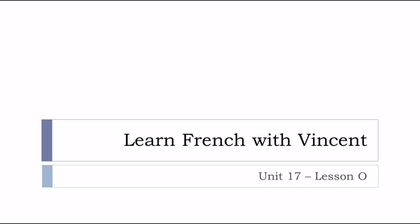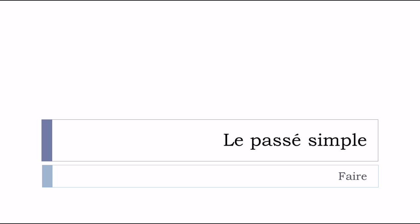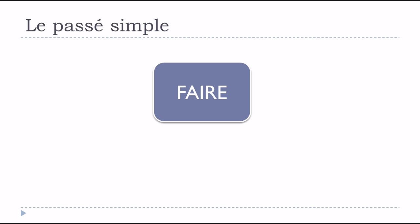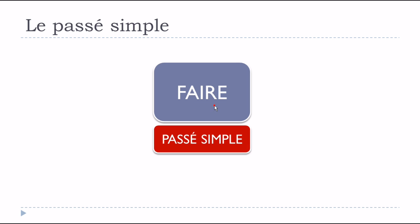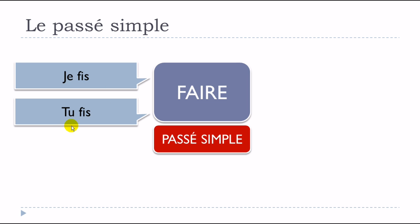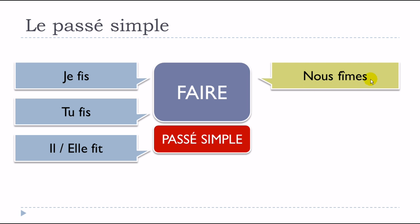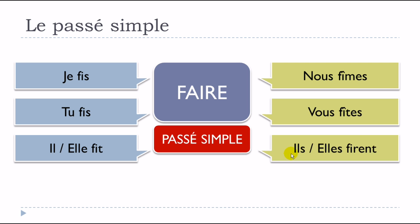Bonjour à tous and welcome to Learn French with Vincent. This is Unité 17, Leçon O. We'll continue the series covering le passé simple — in this one, the verb FAIRE, to do. Je fis, tu fis, il fit, elle fit, nous fîmes, vous fîtes, ils firent, elles firent.